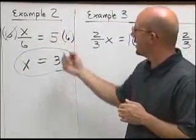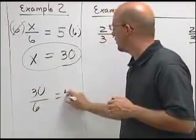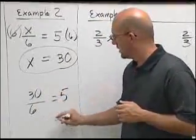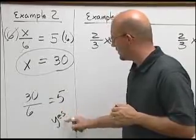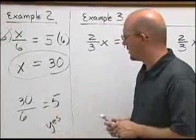If we go back and check our answer, is 30 over 6 equal to 5? And the answer is yes, and I even spelled yes correctly this time. 30 divided by 6 equals 5.